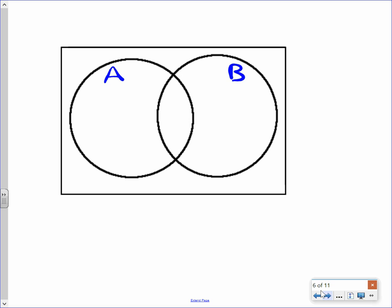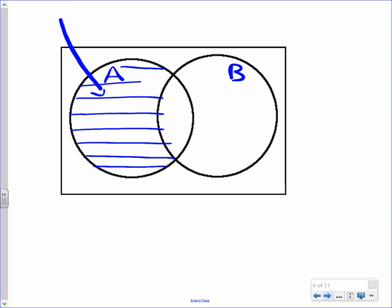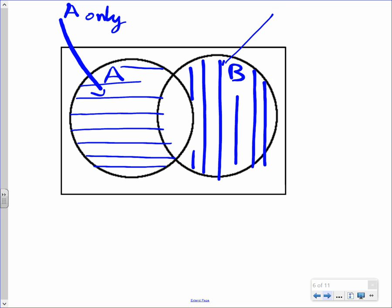What I want you to do here is shade this just with horizontal lines, just the part that's A that's not the overlap, and put an arrow and put 'A only'. The B part that's not overlap, we're going to put vertical lines. This part is B only. Inside the middle it's crisscrossing both the horizontal and vertical. Put an arrow - that's A and B.